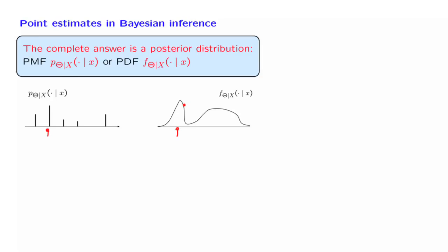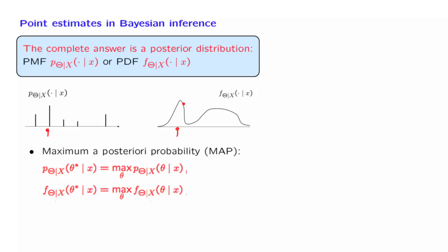Using a similar philosophy in the continuous case, you could find the value of theta at which the PDF is largest and report that particular value. This particular way of estimating theta is called the maximum a posteriori probability rule. We already have a specific value of x, and therefore we have determined the conditional distribution for theta. What we then do is find the value of theta that maximizes over all possible thetas the conditional PMF of this random variable capital theta. Similarly in the continuous case, it's the value of theta that maximizes the conditional PDF of the random variable theta.